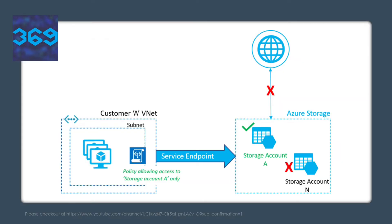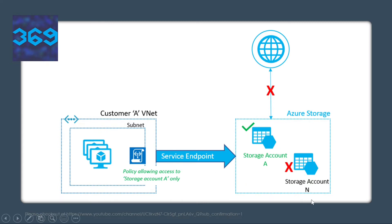VNet service endpoints provide secure and direct connectivity to Azure services over an optimized route over the Azure backbone network. This is the tutorial overview of how the service endpoint works. Service endpoint policies allow you to filter egress virtual traffic to Azure storage accounts over service endpoints, and allow data exfiltration to only specific Azure storage accounts. So if you have storage account A and storage account N, but the policy is set up only for storage account A, then traffic will only go to storage account A and not to storage account N. Endpoint policies provide granular access control for virtual network traffic to Azure storage when connecting over service endpoints.